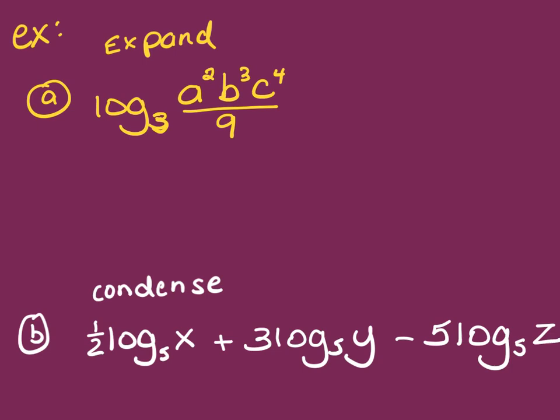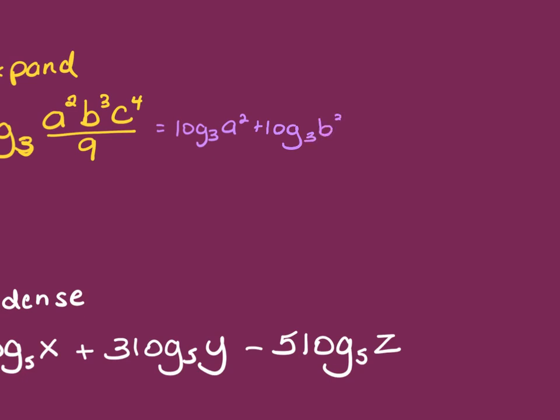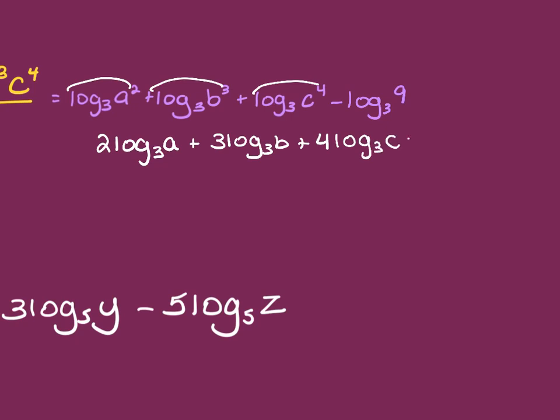So the first one has a couple of things happening, right? You've got log base three of a² times b³ times c⁴ over 9. The numerator is a product. So what happens when we split a product? It becomes addition. So this would be log base three of a² plus log base three of b³ plus log base three of c⁴. Then comes the division, which becomes what? Subtraction minus log base three of 9. Good so far. Now what happens with all those exponents? They get bumped to the front. So this becomes 2 log base three of a plus 3 log base three of b plus 4 log base three of c minus log base three of 9.